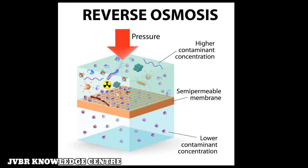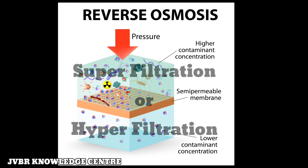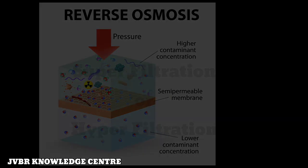In this process, pure water is separated from salt water. A pressure of 15 to 40 kg per cm² is applied for separating the water from its contaminants. The membranes used are cellulose acetate, polymethyl acrylate, and polyamide polymers. The process is also known as superfiltration or hyperfiltration.